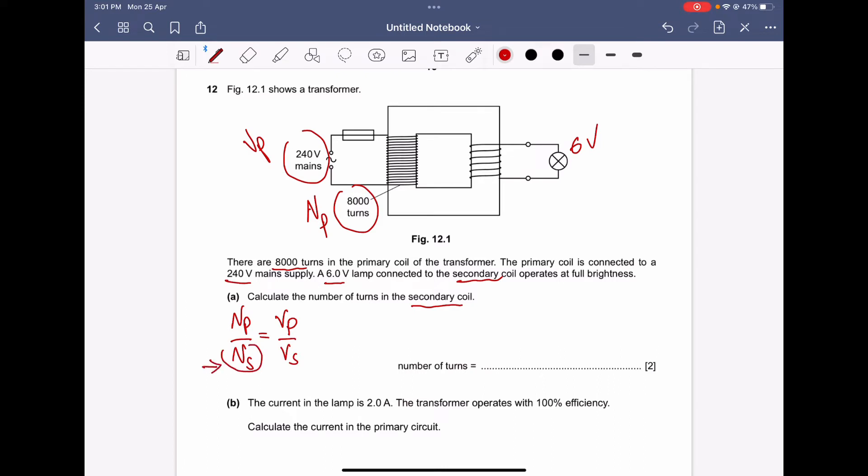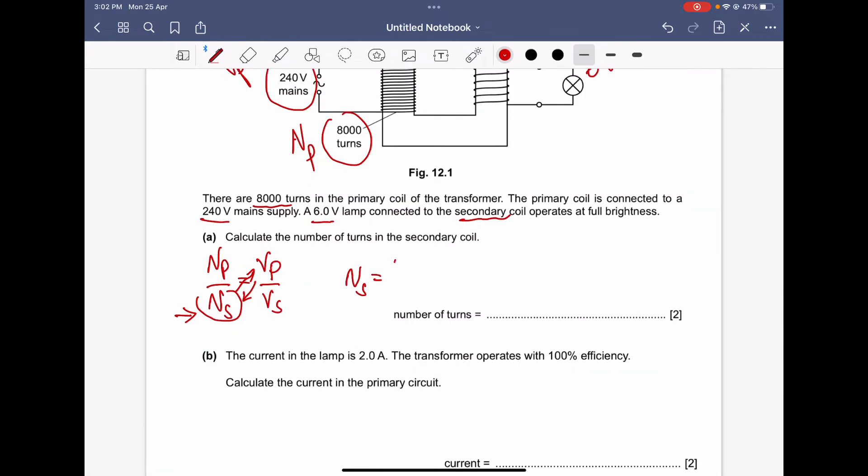I need to calculate Ns, the number of turns in the secondary coil. So Ns by cross multiplication equals - you can change the position of Ns by cross multiplication with the Vp - so it's Np times Vs divided by Vp.